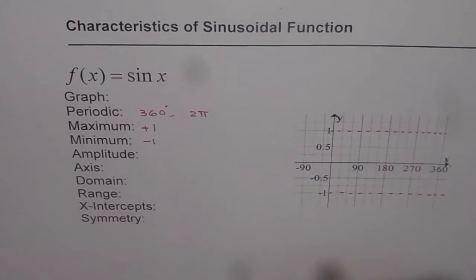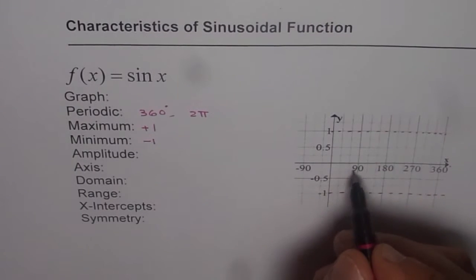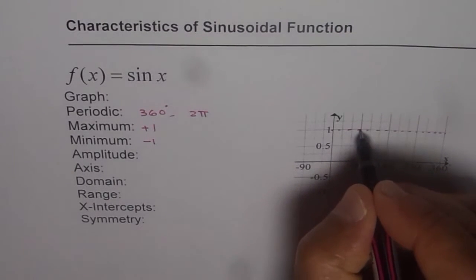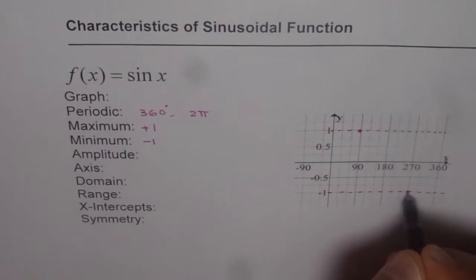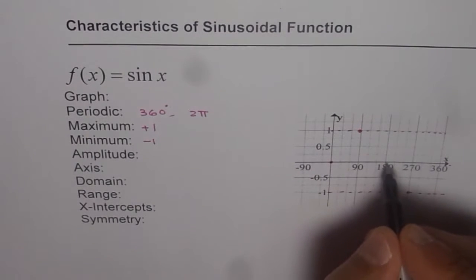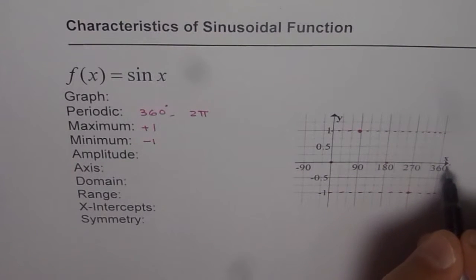Now when is it plus 1, when is it minus 1? Well for sin of x it is plus 1 for 90 degrees and minus 1 for 270 degrees and it is 0 for 0 and 180 degrees and 360 degrees.